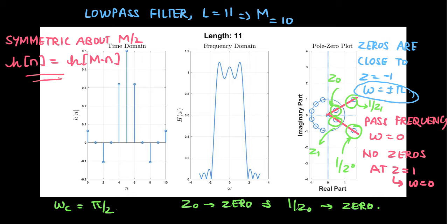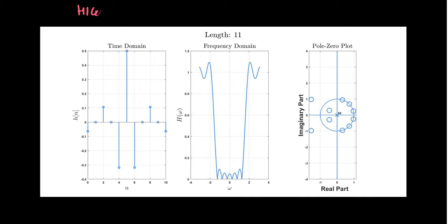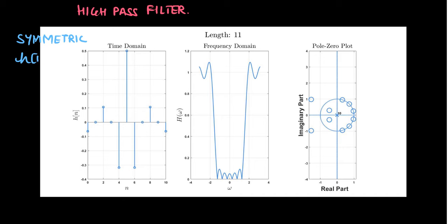Let us move ahead to the high pass filter. This is the time domain equivalent of the high pass filter, and again we can see that it is symmetric about m/2. The same condition holds: h(n) = h(m - n). Observing the frequency domain representation, we can see that the frequency components near zero are completely attenuated. This gives us the intuition that the zeros for this filter should be concentrated more towards z equal to 1, or omega equal to 0.